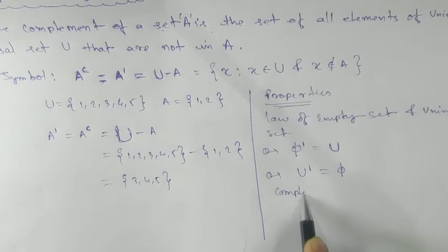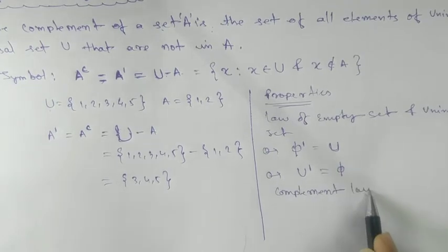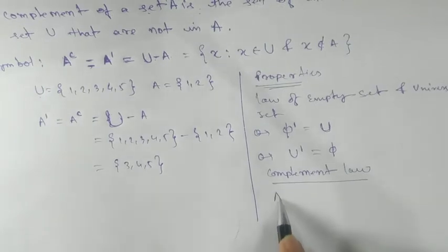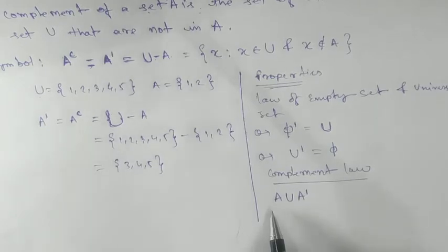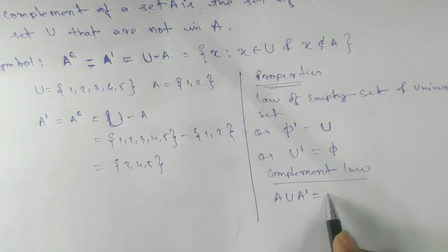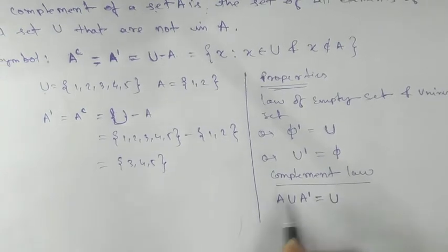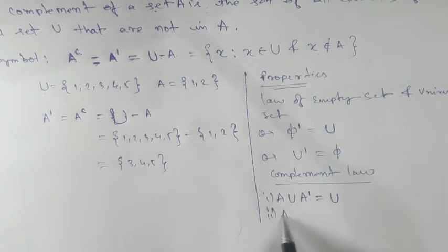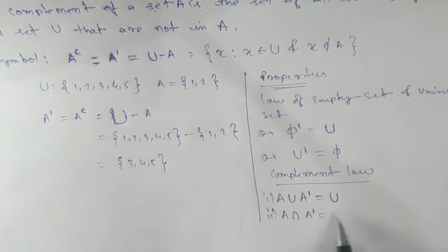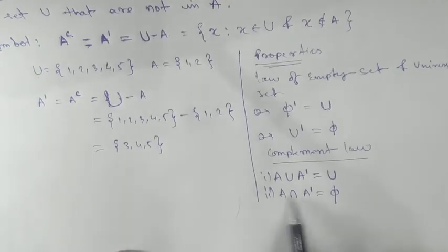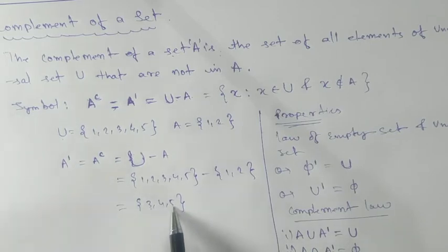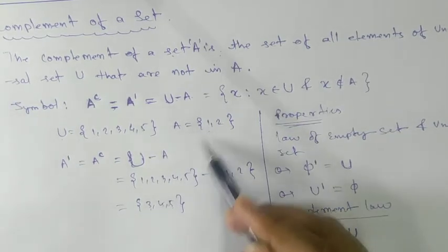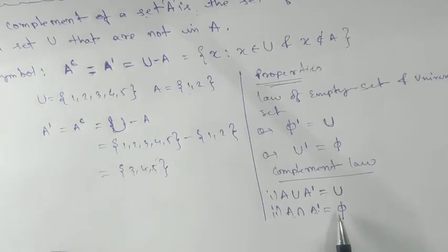Next is the complement law. If we take a set A and union it with complement of A, we get the universal set. Also, A intersection A complement gives you the empty set. Why? Because there is no common element between A and A prime. A contains {1, 2} and A complement contains {3, 4, 5} — no common elements, so the result is the empty set.